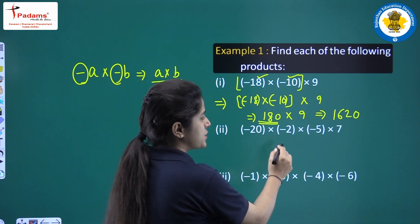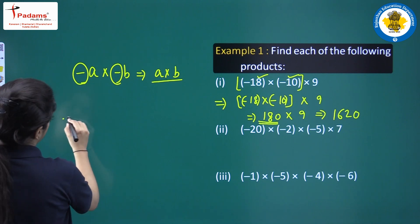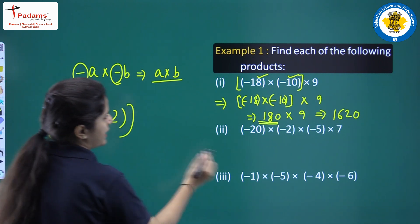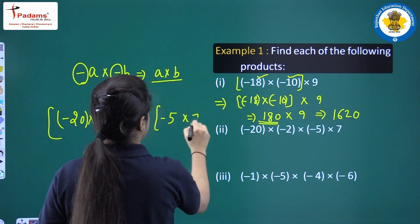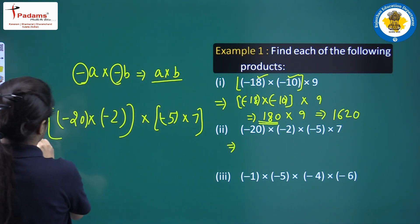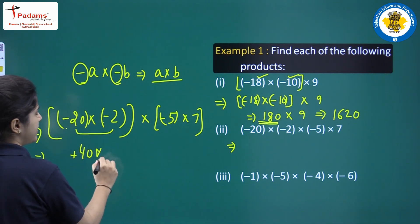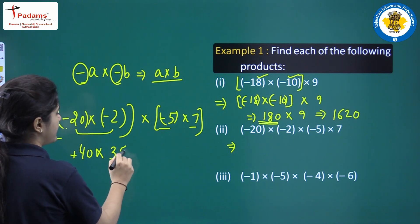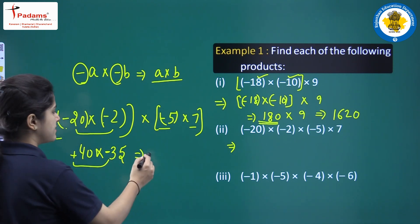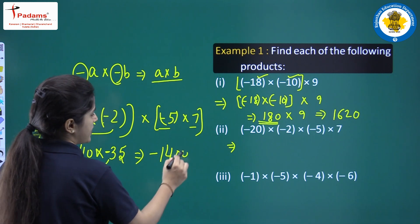Second part: minus 20 into minus 2 into minus 5 into 7. In this question you can put the brackets like this and solve it. 20 multiplied by 2 equals 40 — minus times minus is plus. Into 5 into 7 equals 35. Minus times plus is minus, so the answer will contain a negative sign. 35 multiplied by 40 equals 1400, so the answer will be minus 1400.